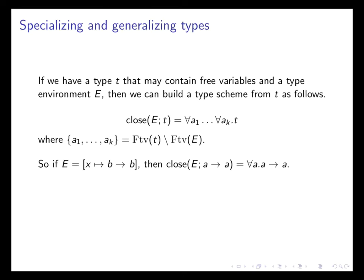So close E of T puts type variables in front of T, namely all the type variables that are free in T, but were not free in E. So if we have this type environment that says that X has type B to B, and if we close E with respect to A to A, then we get for all A, A to A. We do not add a for all B because B is free here.